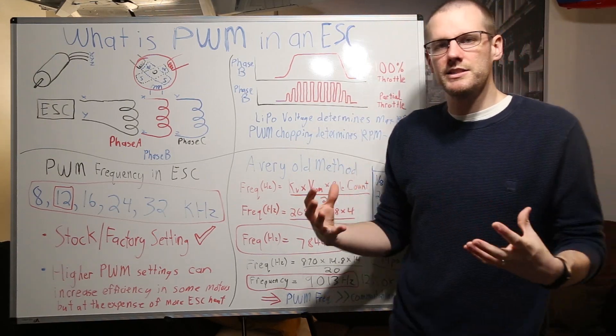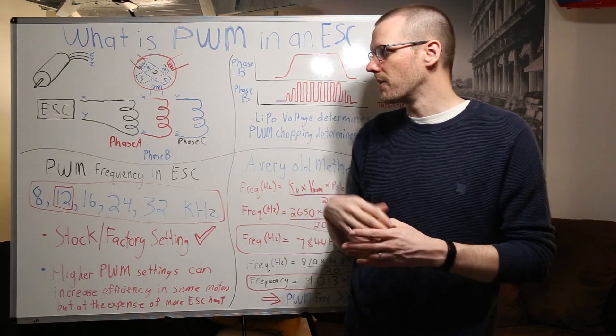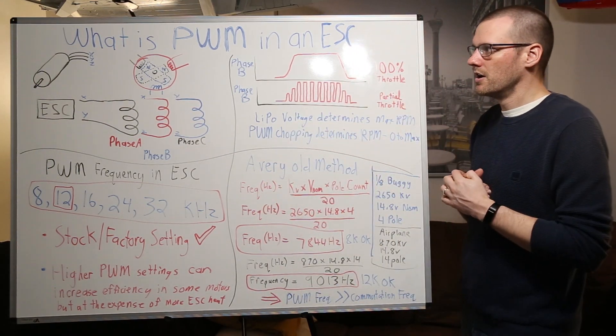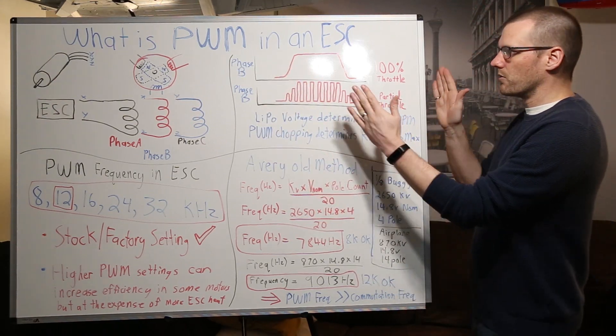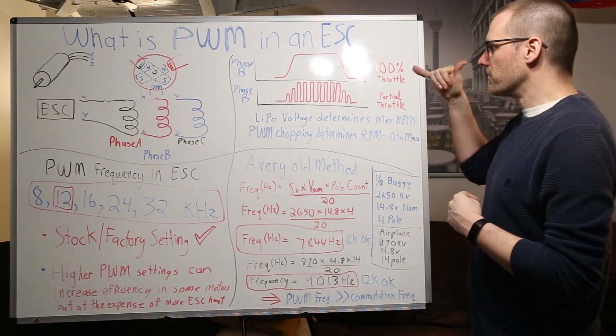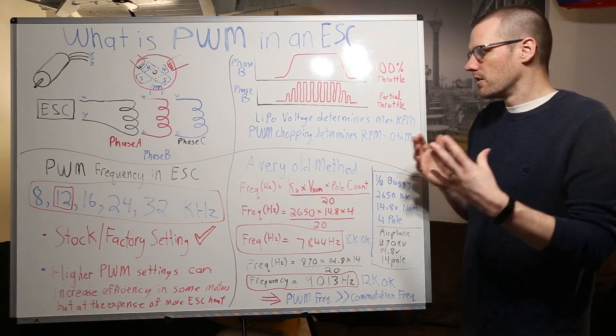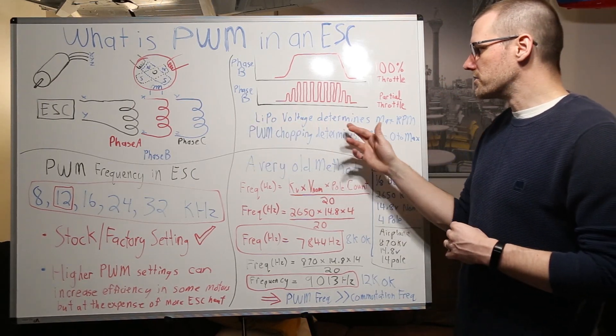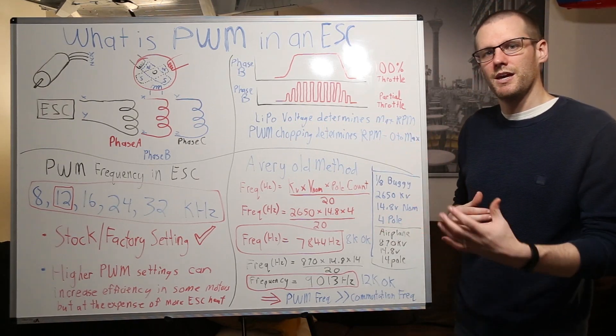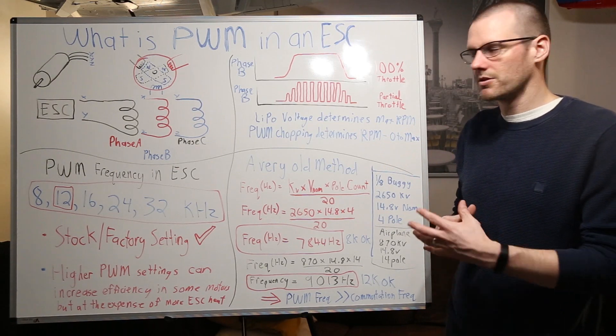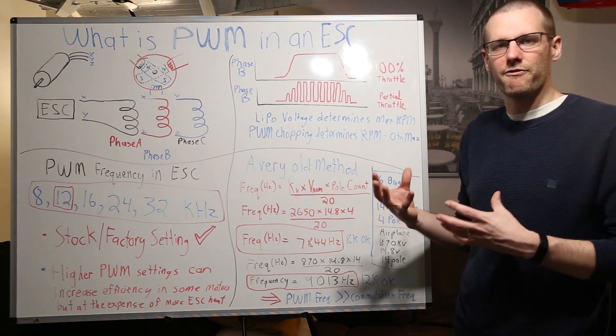The next question is well how do we get speed of the motor from our speed control if you can't control it through the commutation? Well that's when we get into this next part here where we look at our phase B independently and only. So now we go ahead we'll focus in on just our phase B and we'll look at two conditions: 100% throttle and then also partial throttle. We'll read also these lines here: the lipo voltage determines the maximum RPM.